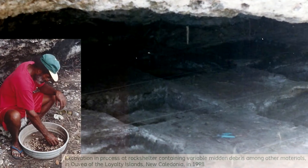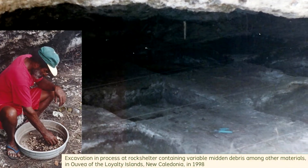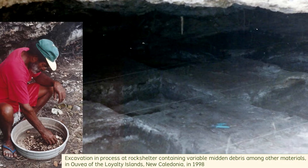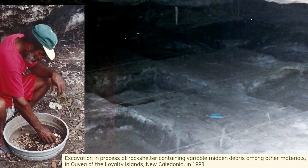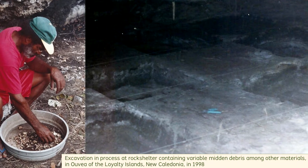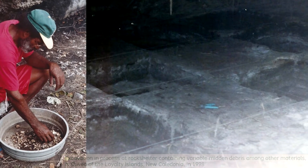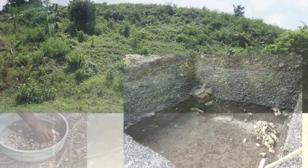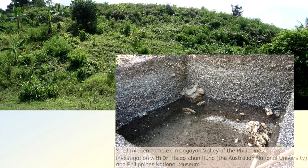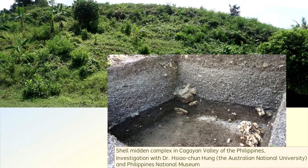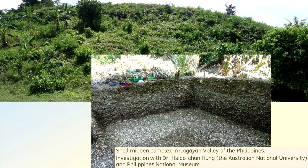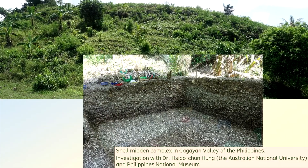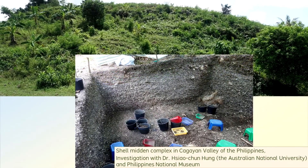The individual pieces of discarded refuse could be dispersed or diffuse, or they could be packed together densely. The ratio can be variable when comparing the amounts of midden material versus the amounts of sedimentary particles. Within a midden site or deposit, the most abundant materials are the food remains. Some archaeologists use the term midden remains synonymously with the term food remains, or perhaps eco-facts.